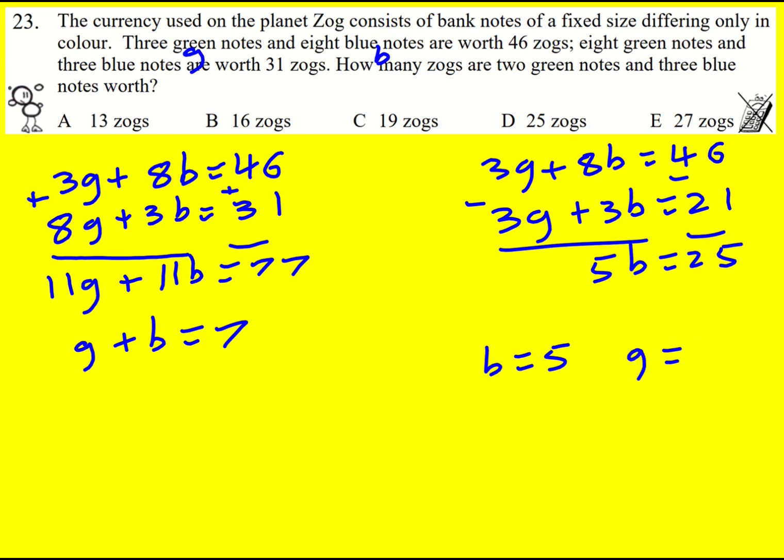From this I'm going to get that g is equal to 2. So now I want how many zogs are two green notes and three blue notes. Well, 2 times 2 is 4, 3 times 5 is 15, so it's going to be worth 19 zogs.